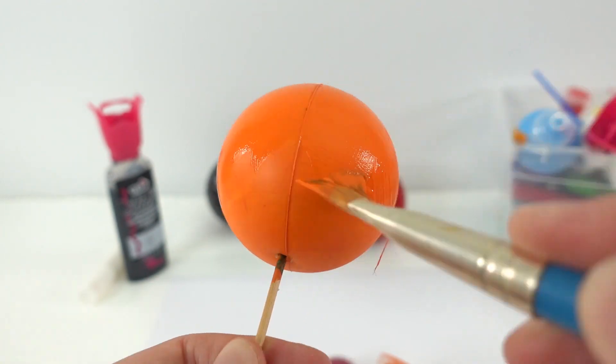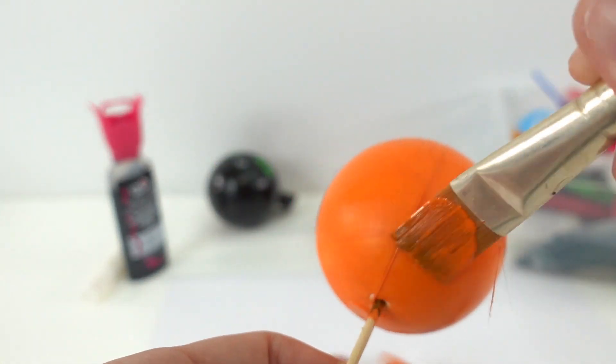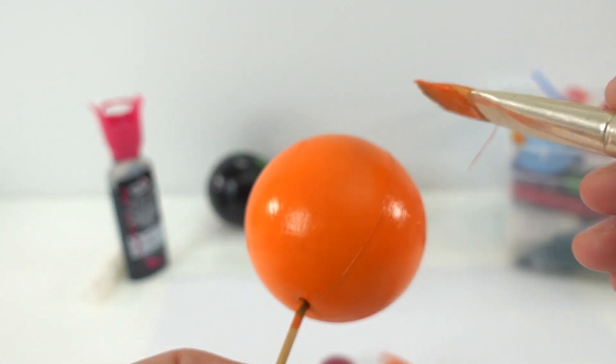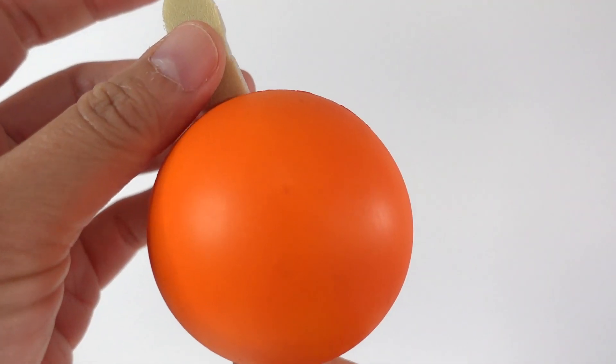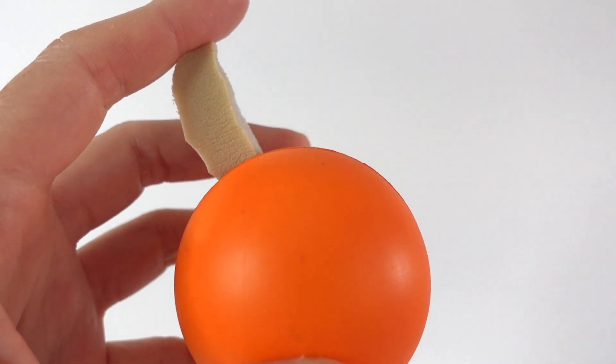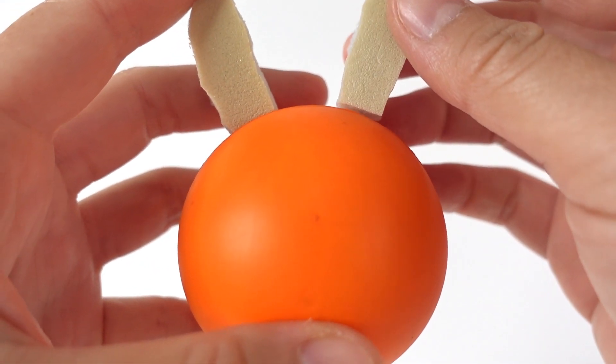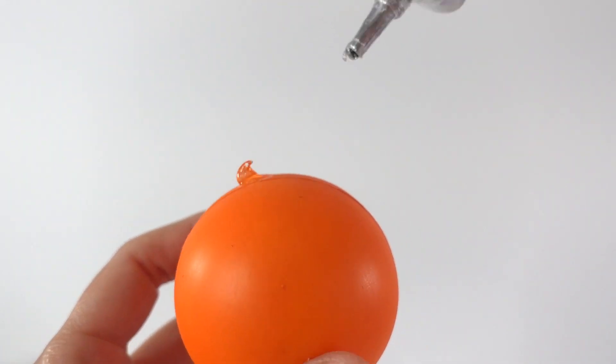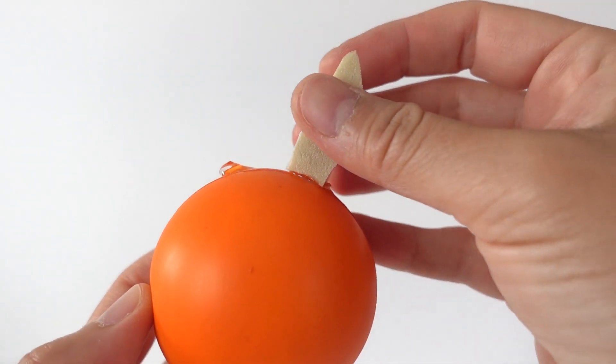The reason why we're using puffy paint is because puffy paint is a little bit stretchy. So then when you're squeezing the ball, the paint's not going to crack. Once the base layer is done, we're going to glue on some ears. I've cut out two ears using foam and we're going to just attach them with glue.